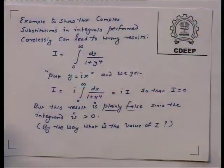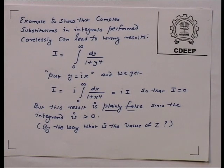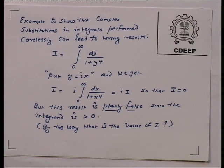I will give you a rather convincing answer. Let us look at this integral: I equal to integral from 0 to infinity of dy upon 1 plus y to the power 4. Put y equal to ix. What do you get? I equal to little i times integral from 0 to infinity of dx upon 1 plus x to the power 4, which is little i times capital I. So capital I is 0, but this result is plainly false since the integrand is positive.